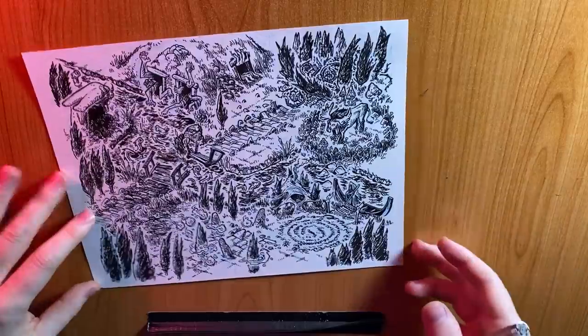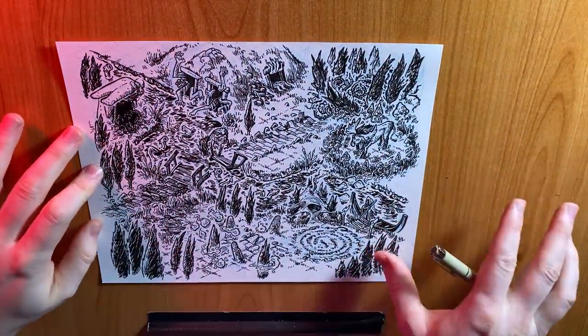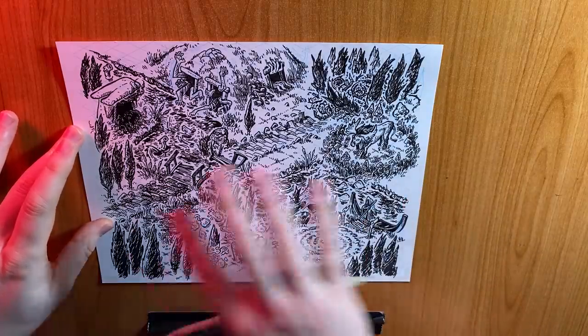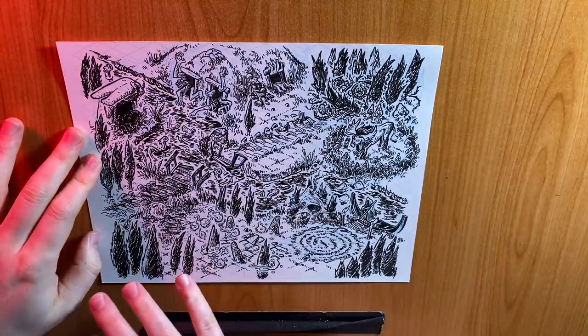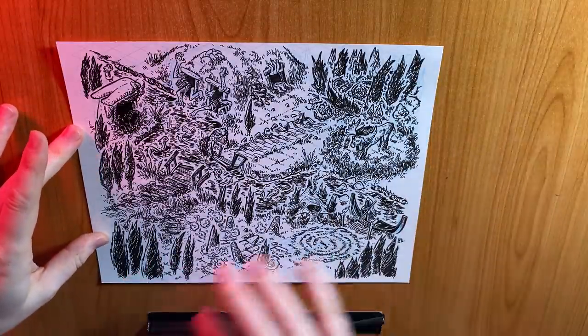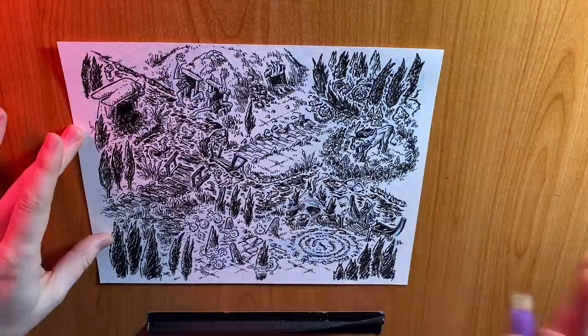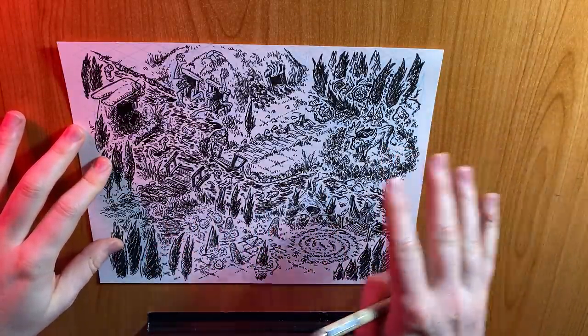So I think this is done. I think I have what I want out of this map. I'm just going to go through, take one final pass, see if there's any line weights that need to be beefed up or values that need to be adjusted here and there. But I think I'm maybe five, ten minutes away from being finished with this.